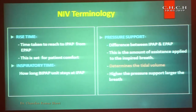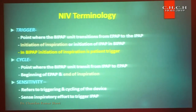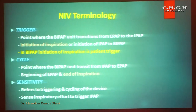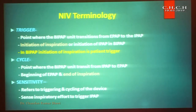The difference between IPAP and EPAP determines the tidal volume — wider the gap, more will be the tidal volume. The trigger is the point where the BiPAP unit transits from EPAP to IPAP, and it is the initiation of inspiration. In case of NIV, it is a pressure trigger. The cycle is the initiation of expiration and end of inspiration, where IPAP transits and EPAP starts.